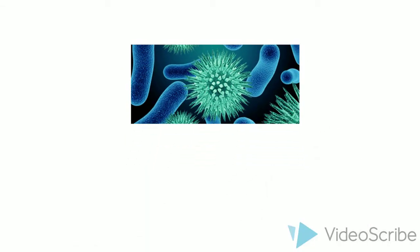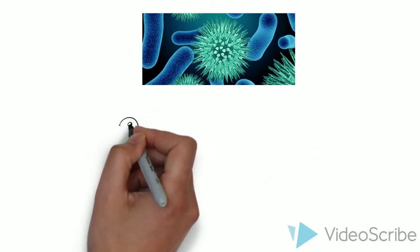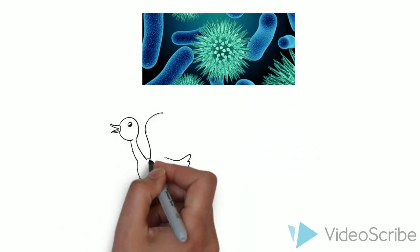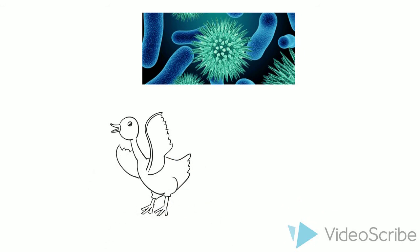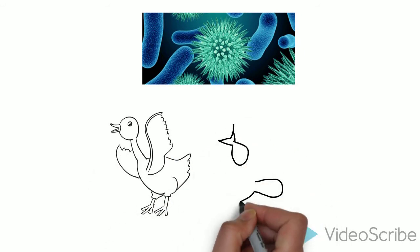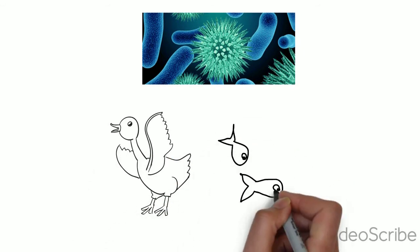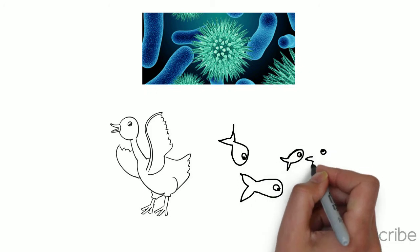Researchers believe that the Round Gobi is linked to outbreaks of botulism type E, a disease found in the Great Lakes. This disease affects many fish and fish-eating birds, causing them to die off.